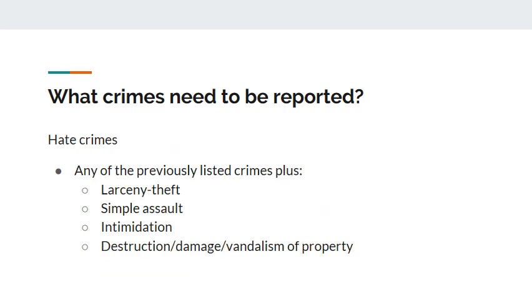Hate crimes can be interpreted in a few ways. On the report form, it displays eight possible ways to classify an incident as a hate crime. It is on the second page towards the bottom. If the Campus Security Authority is uncertain, the Campus Security Authority still has to file the report and detail the incident, and the Title IX Coordinator will determine the crime.